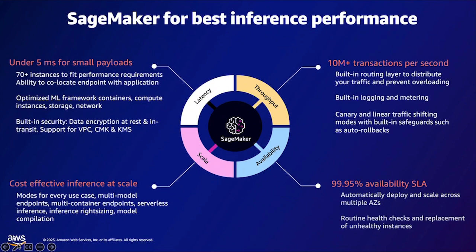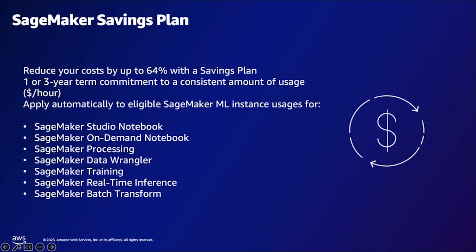SageMaker offers about 99.95% availability SLA. It continues to run routine health checks and replace unhealthy instances automatically. SageMaker also offers cost-effective techniques such as multi-model endpoints, serverless inference, instance rightsizing, and model optimization tools. The SageMaker Savings Plan allows you to save up to 64% on SageMaker instances in exchange for a commitment to a consistent amount of usage for a one or three-year term, automatically applying to eligible ML instances regardless of instance family, size, or AWS region.